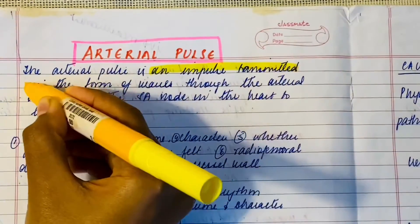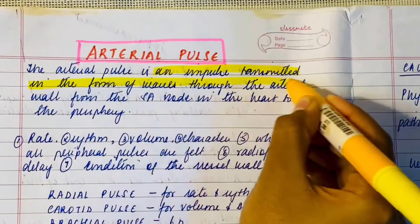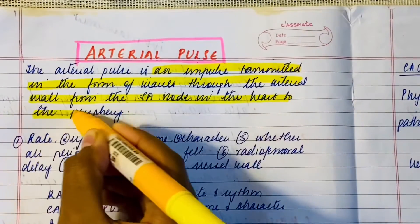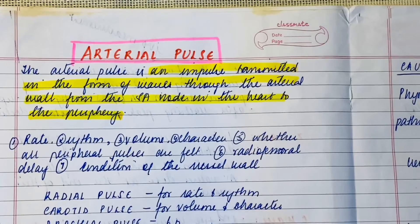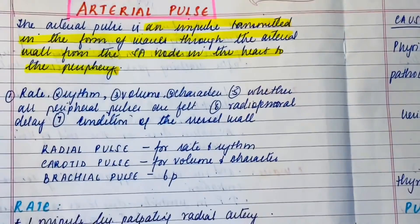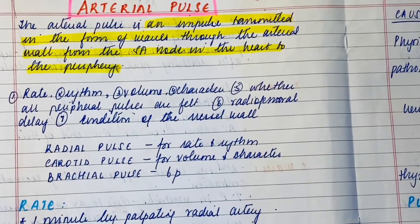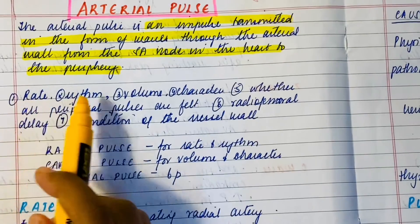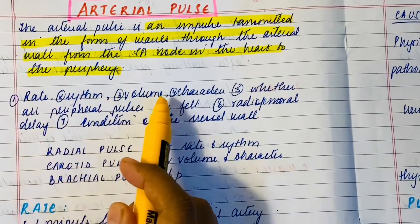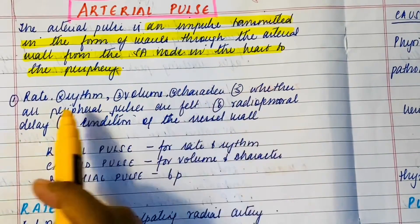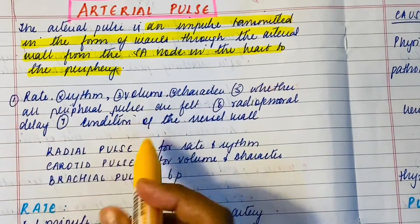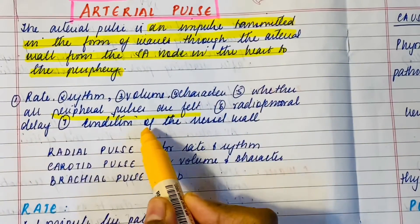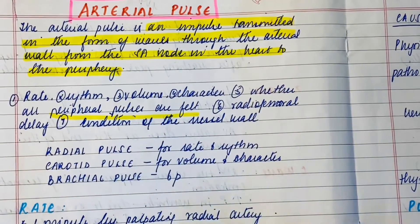An arterial pulse is basically an impulse which is transmitted in the form of waves through the arterial wall from the SA node in the heart to the periphery. We essentially look for seven main things in a pulse while measuring: rate, rhythm, volume, character, whether all the peripheral pulses are felt, the radio-femoral delay, and condition of the vessel wall.